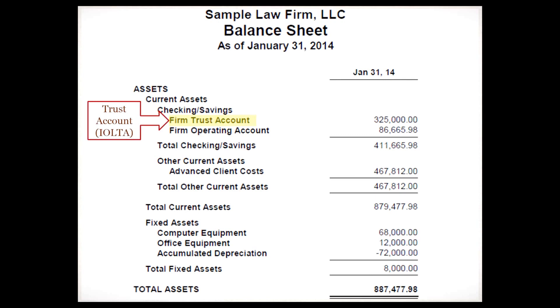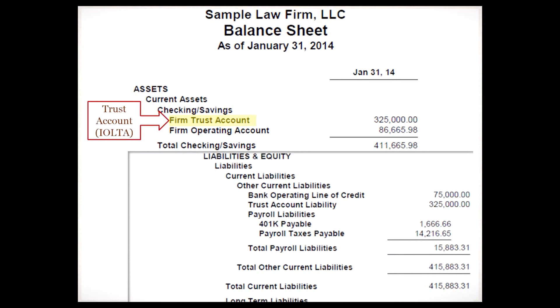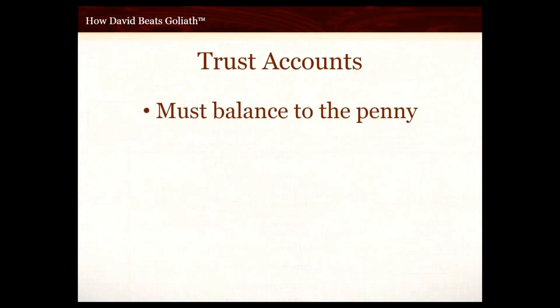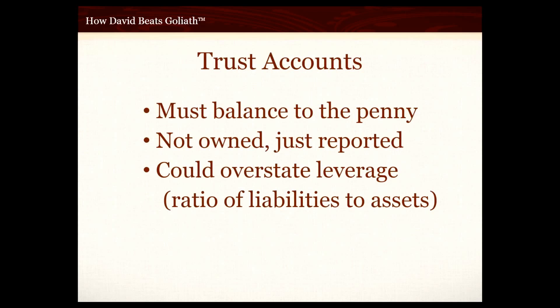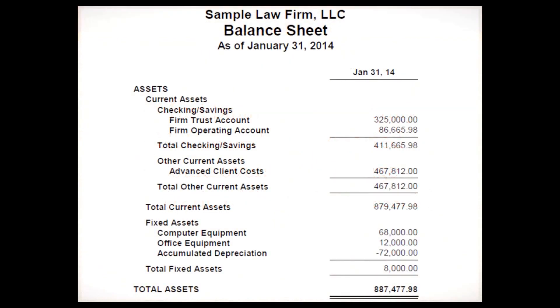The first item under current assets is the firm trust account, sometimes called the IOLTA account. I want to show the liability section superimposed here — you'll see a corresponding entry in the liability section for the trust account, and they match exactly. Trust accounts should balance to the penny. They're not really owned by the law firm; they're just reported on the balance sheet so they can be tracked. Because of that, they could overstate the leverage of the law firm, so make sure any new lender knows you don't actually own that asset.